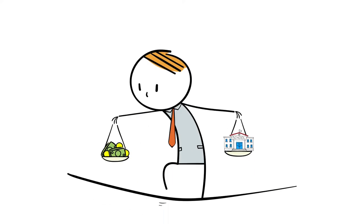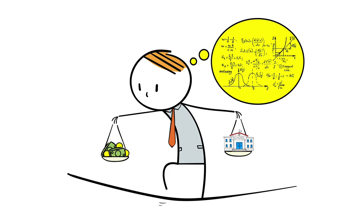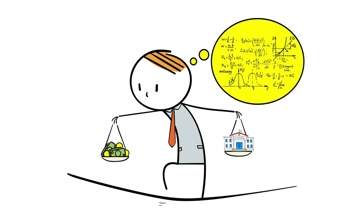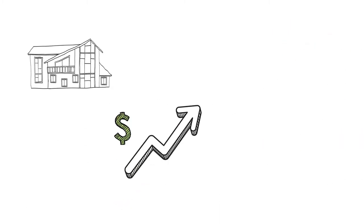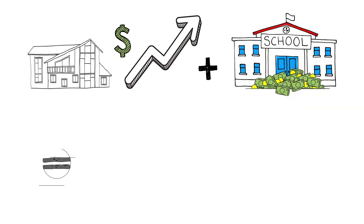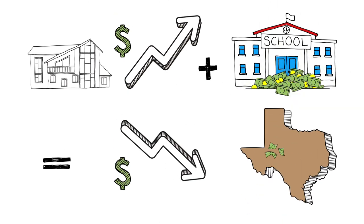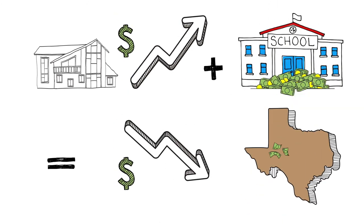The state's public school funding system is made up of a series of complex formulas that include a balancing mechanism. When our local appraisal values rise and our school district gets more money from local property taxes, the state reduces the amount of funding it sends to us.